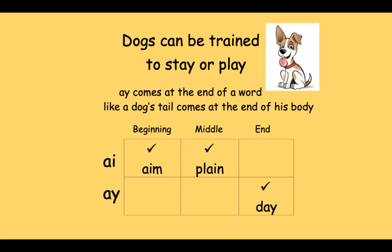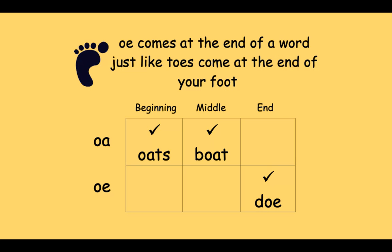For the sound of O: OE will come at the end of a word, just like toes come at the end of your foot. When I hear the word 'doe,' just like in 'toe,' I know it's OE at the end.